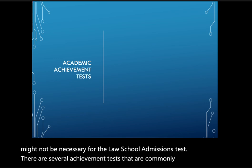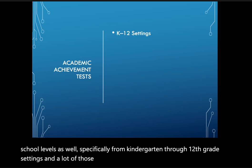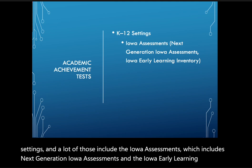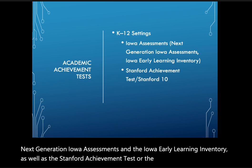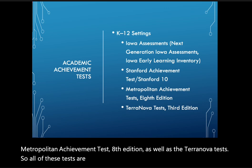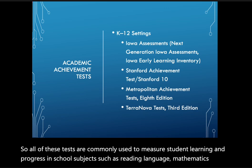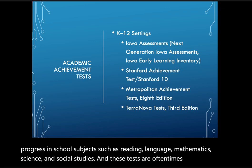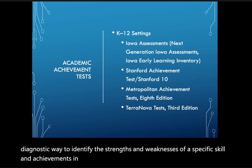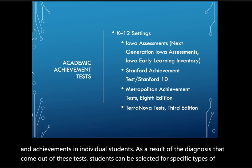There are several achievement tests commonly used in K-12 settings, including the Iowa Assessments, the Stanford Achievement Test (Stanford 10), the Metropolitan Achievement Test eighth edition, and the Terra Nova tests. These tests measure student learning and progress in subjects such as reading, language, mathematics, science, and social studies. They are often used diagnostically to identify strengths and weaknesses, and results can be used to select students for remedial or advanced instruction.